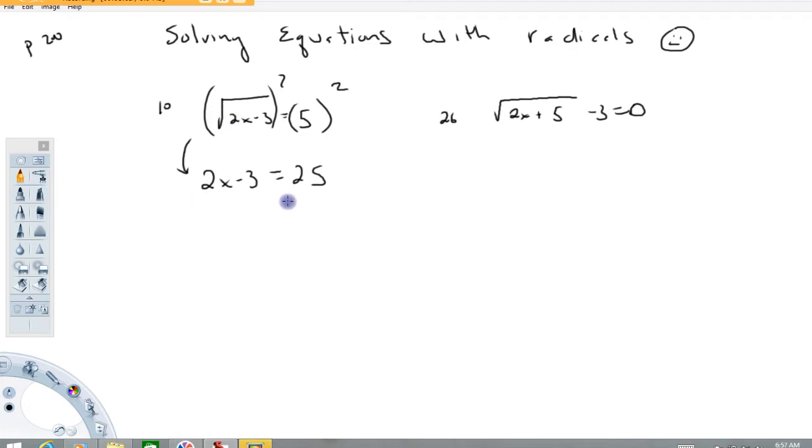Now we just solve the resulting equation here so we would do that by adding 3 to both sides. The next line is going to be 2x equals 28. Then we'll divide both sides by 2. So x equals 14.